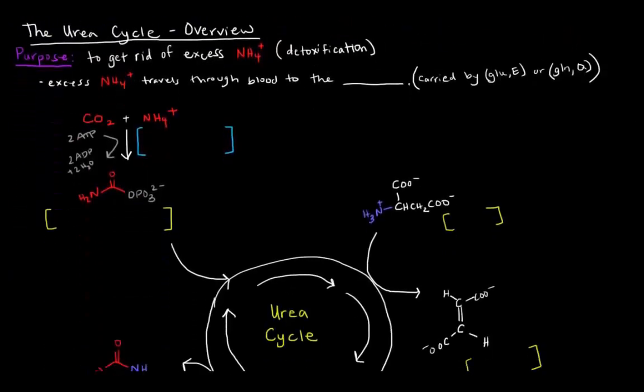So let's talk about the overview of the urea cycle. The purpose is to get rid of excess ammonium ion. Basically, it's getting rid of a toxic compound, which is detoxification.